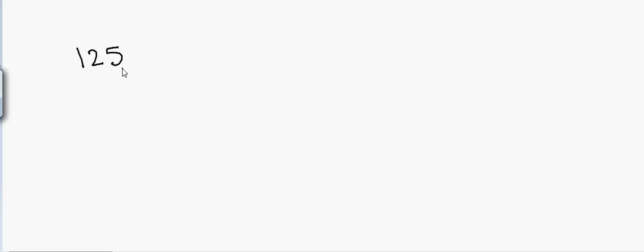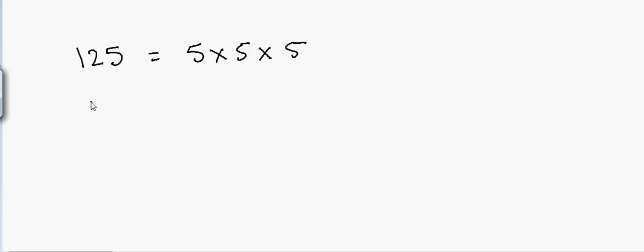We know that 125 equals 5 × 5 × 5, so instead of dividing by 4 we divide by 8. I'm using 80 as an example because it's easy to divide by 8. So if I multiply 80 by 125...